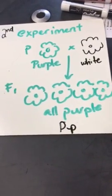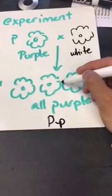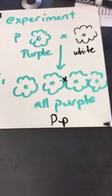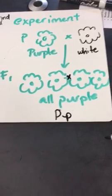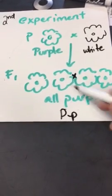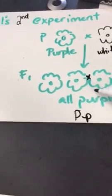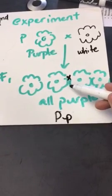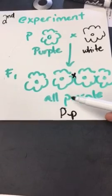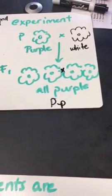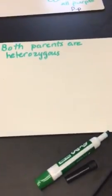He didn't stop there. From there he took these two and he crossed them. And then what did he find out? When he crossed these two, he found out that these two parents would give a three to one ratio. Three of them would be purple, one would be white. How did that happen? Let's take a look at a Punnett square.